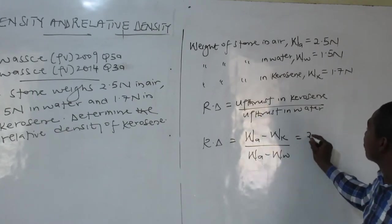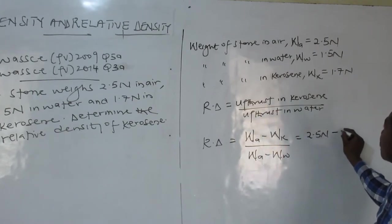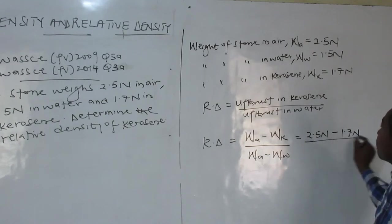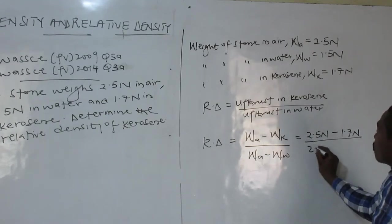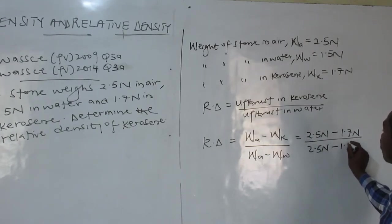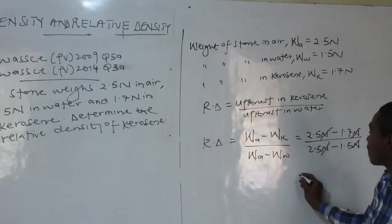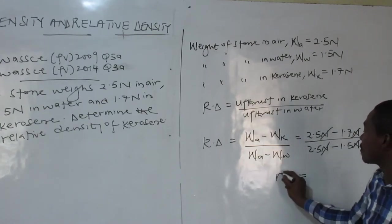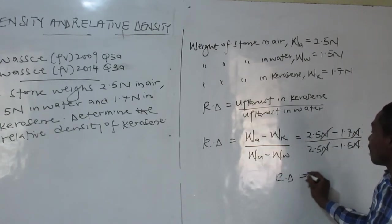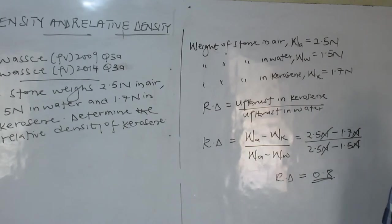Substituting: the numerator uses the kerosene value and the denominator uses the water value — both referenced from the air weight of 2.5 Newtons. Relative density has no units, and you get 0.8. So that is the concept of relative density and upthrust.